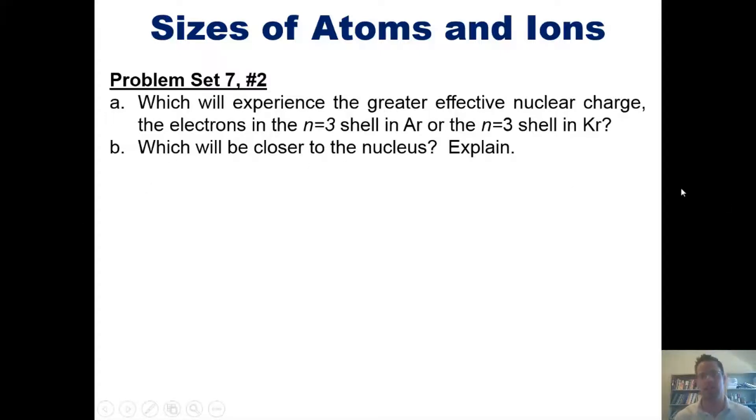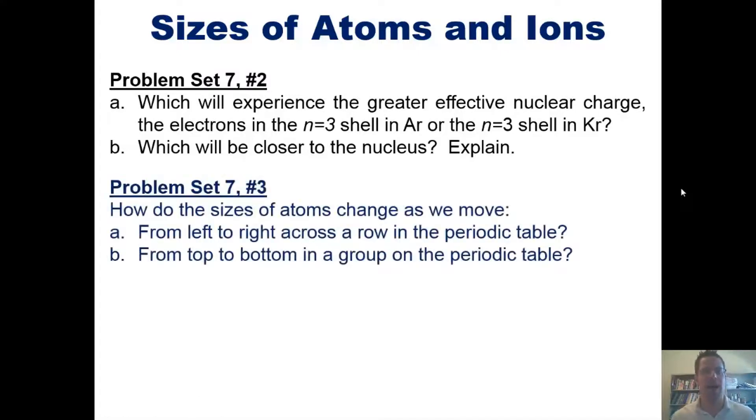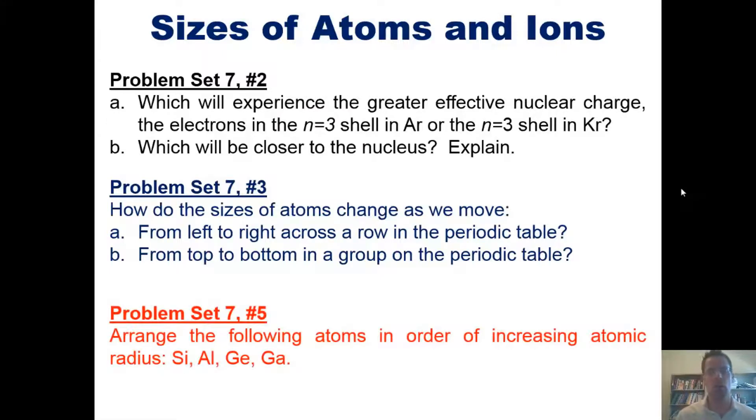Next, how do the sizes of atoms change as we move from left to right across a row in the periodic table and from top to bottom in a group in the periodic table? And arrange the following atoms in order of increasing atomic radius.